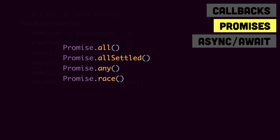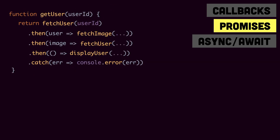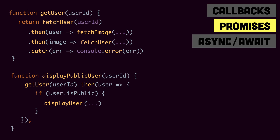Let's look at this promise version again. Say we need a function called getUser — we pass it the user ID, it fetches the user and displays it. Now if we're required to display the user only if it is public, we create a function called displayPublicUser, pass it the user ID, get the user, then have a check with .then(), and display the user. If you look at these two functions, we still have a lot of callbacks — fetchUser has .then() to fetch the image, .then() to fetch the creator, and displayPublicUser has .then() for the check. So even without deeply nested callbacks, we end up in a promise hell.